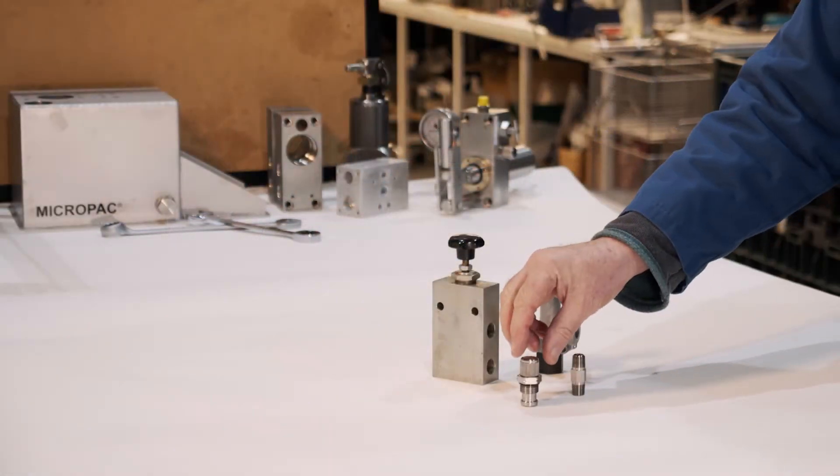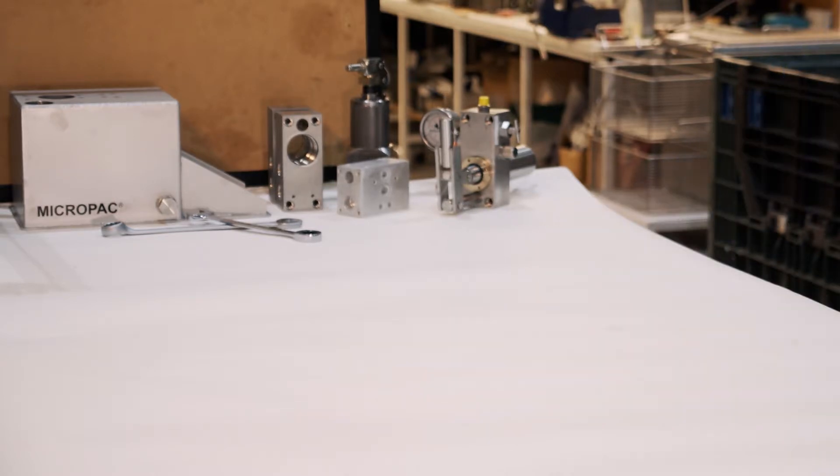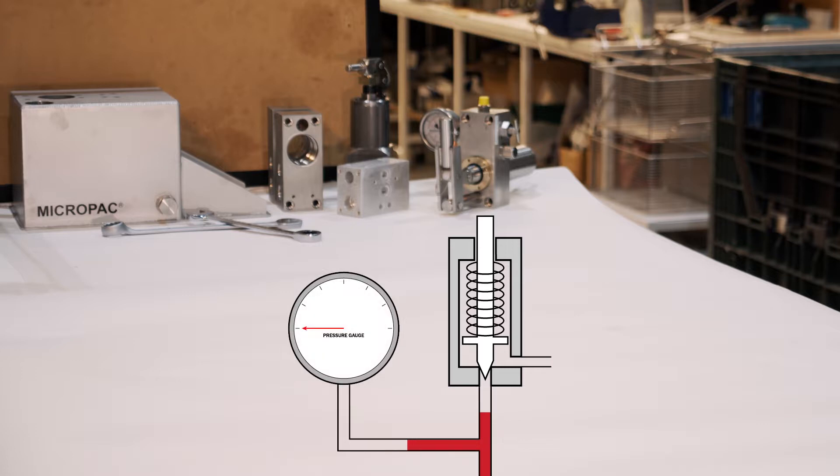I'm looking at this little cartridge relief valve that we fit into our MicroPAC pumps. Let's look at the basics of it. A plunger with a cone is pressed into an orifice using a spring. This seals and won't let flow past.